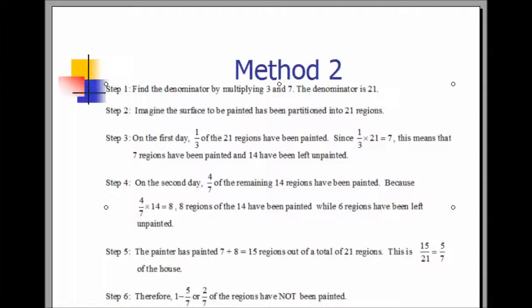Method two is the common denominator method. Find the common denominator by multiplying three and seven, giving a common denominator of 21. Imagine the surface to be painted has been partitioned into 21 regions. On the first day, one-third of the 21 regions have been painted. Since one-third of 21 equals seven, seven regions have been painted and 14 have been left unpainted. On the second day, four-sevenths of the remaining 14 regions have been painted. Because four-sevenths times 14 equals eight, eight regions have been painted while six regions have been left unpainted.